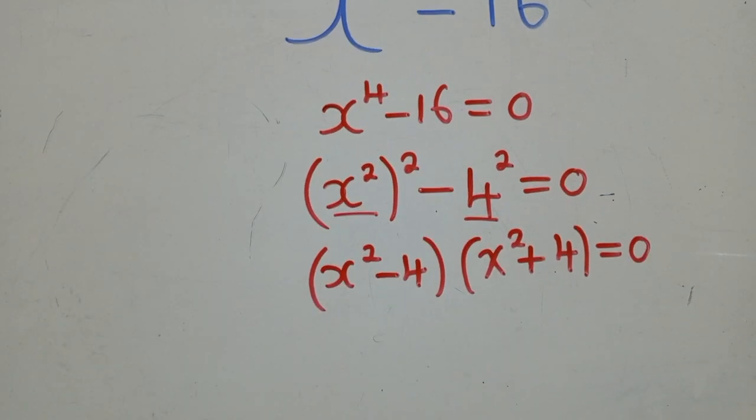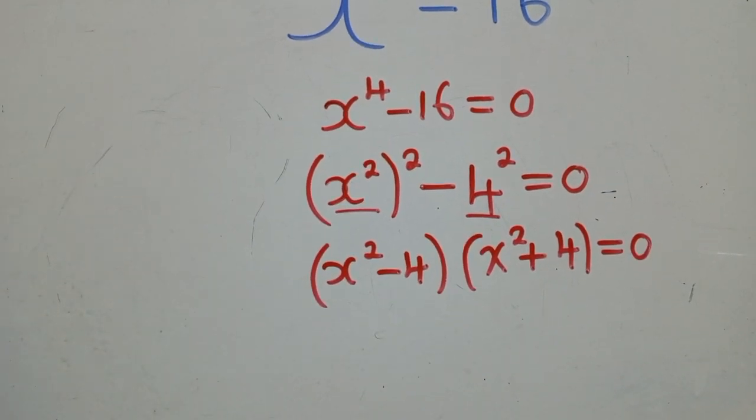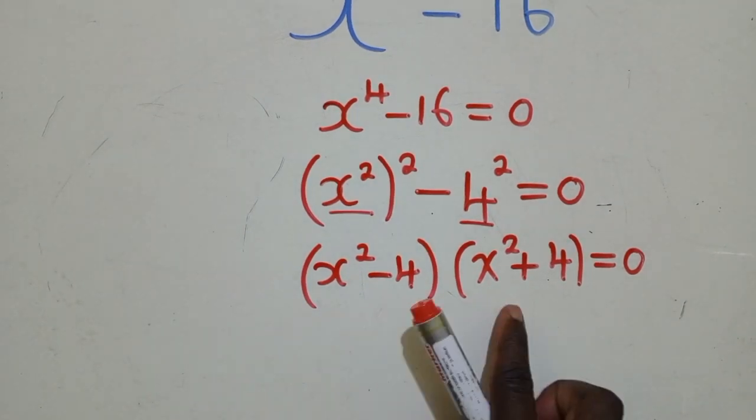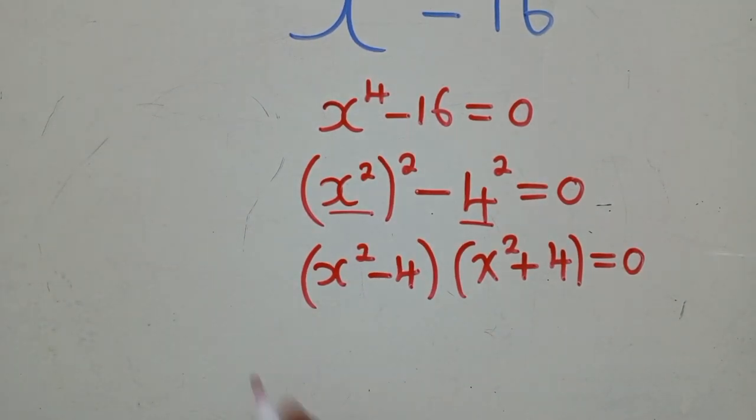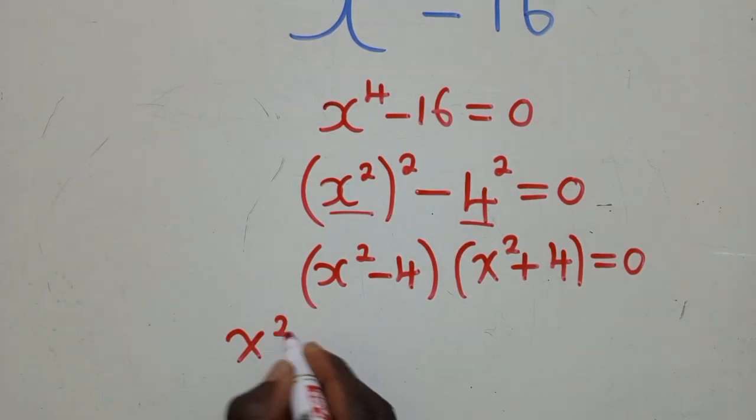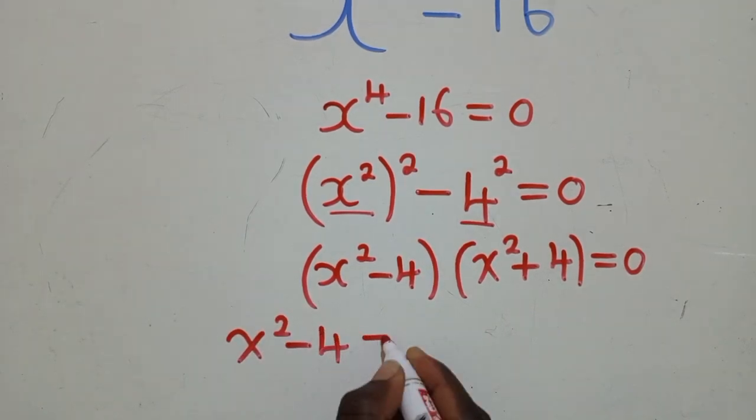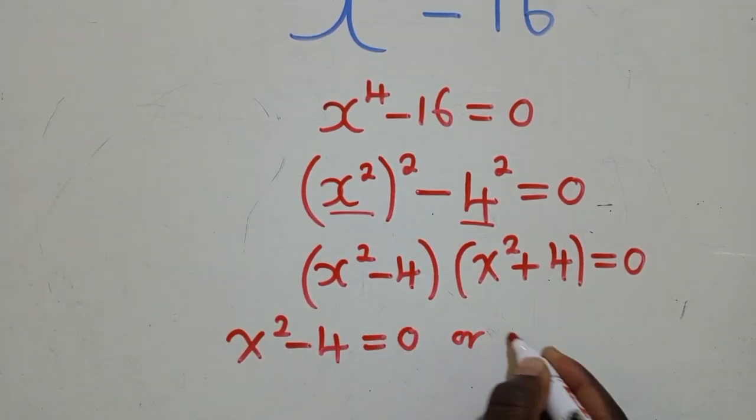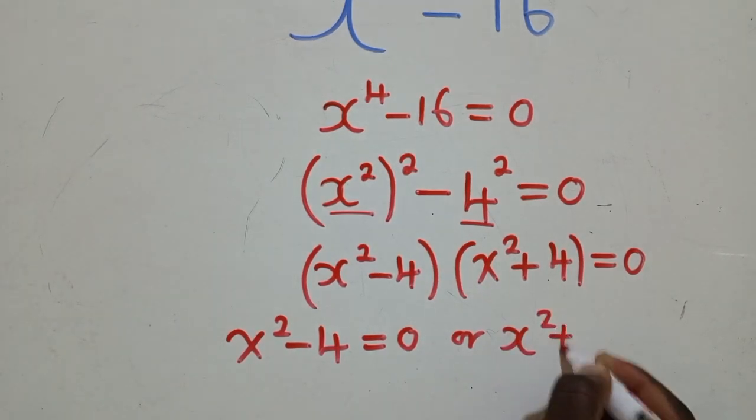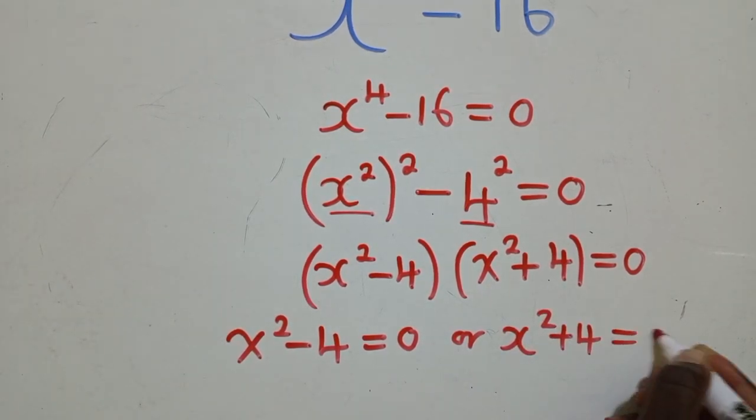So, when we do this, remember, when you've got a quadratic equation, there is a point where you reach this stage. And you say, X power 2 minus 4 is equal to 0, or X power 2 plus 4 equal to 0.